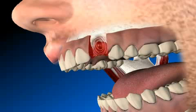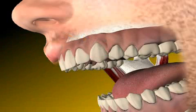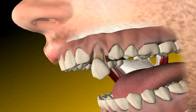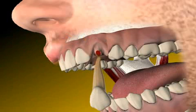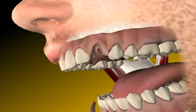Flabby ridge is a dental jargon term for a fibrous ramus mandibulae. Normally, the tooth-supporting ramus mandibulae, also known as the alveolar ridge, is osseous.